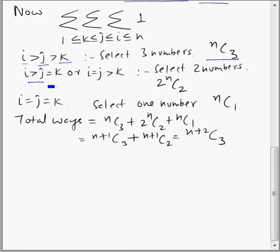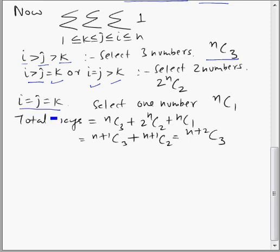The second case covers when two values are equal and one is different: either i > j with j = k, or i = j with both greater than k. In each sub-case we select two numbers, assigning appropriately — giving nC2 per sub-case and multiplied by 2 for the two sub-cases. The third and final case is when all three are equal: we select one number and assign it to i, j, and k, giving nC1 ways. So the total count is nC3 + 2·nC2 + nC1, which equals n+2C3.